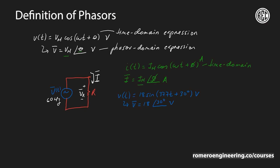Let's do another example for the current. Let's say we have a current whose time domain expression is 17.2 sine of 400t minus 30 degrees, in amps. Then the phasor domain equivalent would be I equal to 17.2 at an angle of minus 30 degrees, also in amperes.